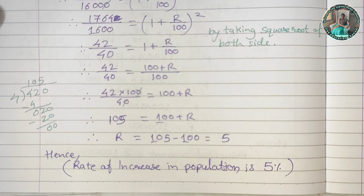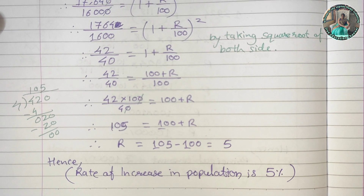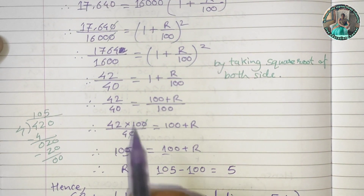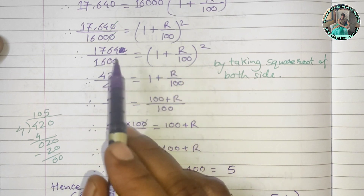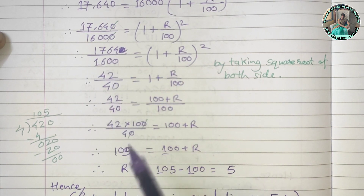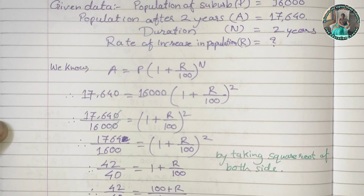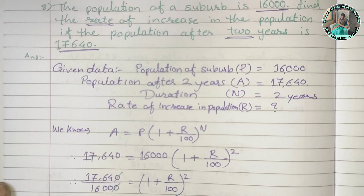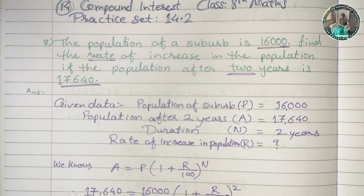The rate of increase in population is 5%. If you do not get this, learn how to find the square root — it is easy.